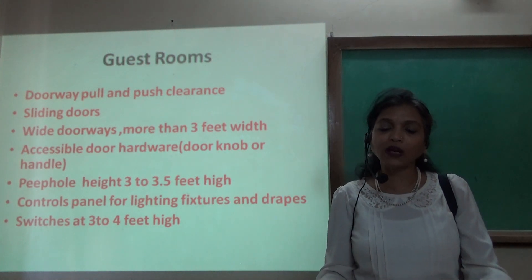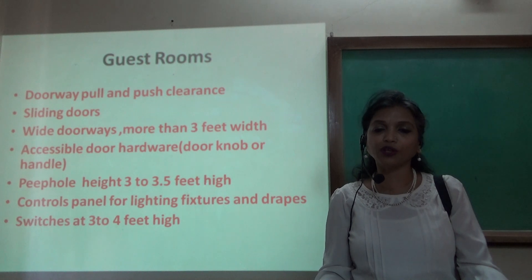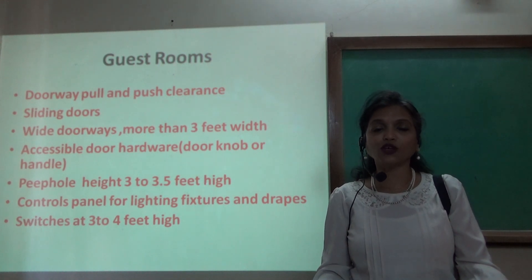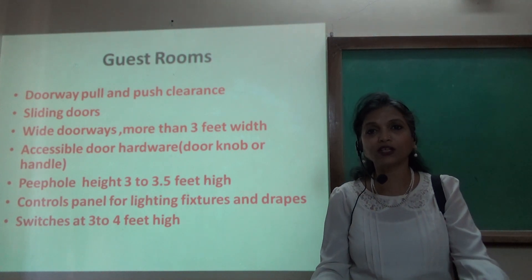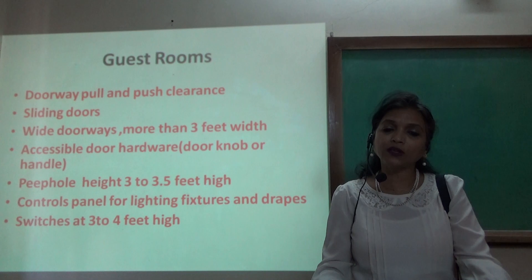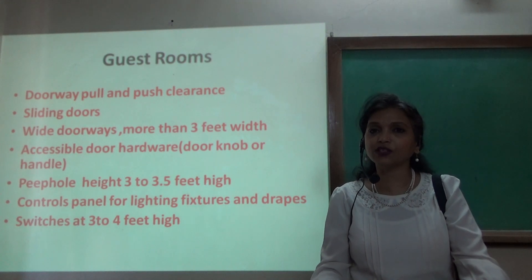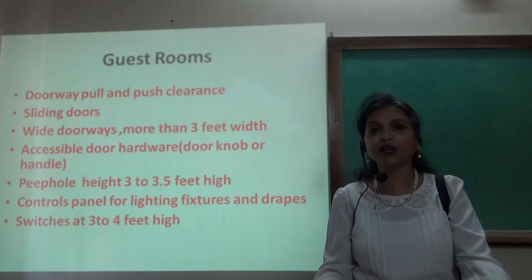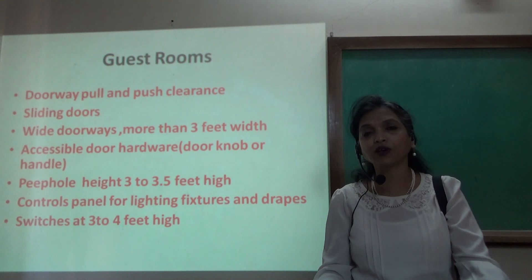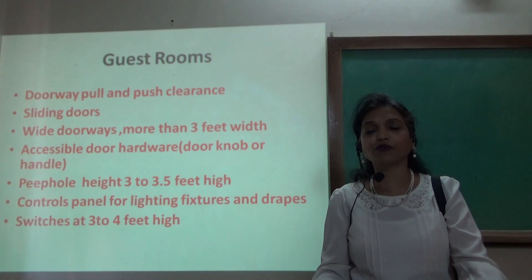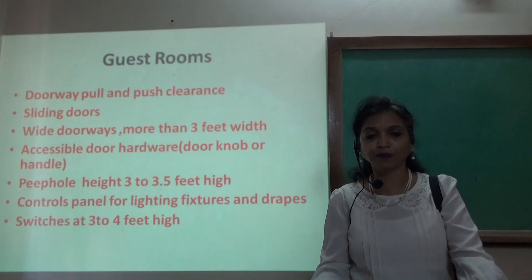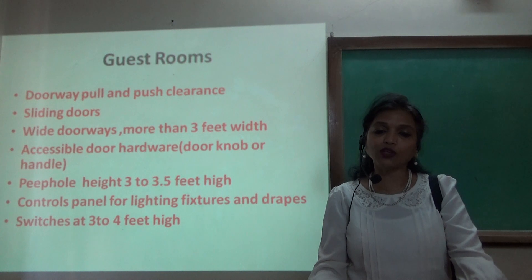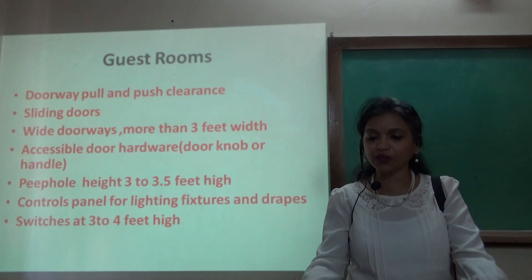The peephole height at the door should be 3 to 3.5 feet high so the guest can access it while sitting on the wheelchair. All control panels for light fixtures and drapes can be remotely accessed. Many hotels have a single panel where all lighting and drapes can be handled with one touch, or we can have the switches positioned at 3 to 4 feet high.